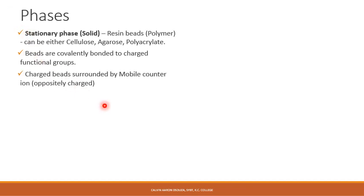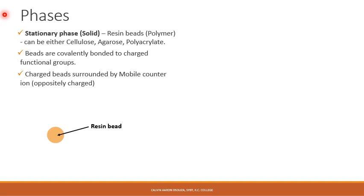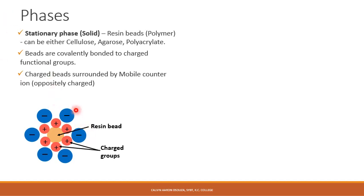The charged beads are surrounded by mobile counter ions, which are added to the beads before we run the sample. For example, this is the resin bead, and to it is covalently bonded your charged functional group, which is completely attached to the bead. If you have a positively charged functional group attached to the bead, then the mobile counter ions used are negatively charged, so that they attract and are bound ionically or electrostatically to the charged groups.